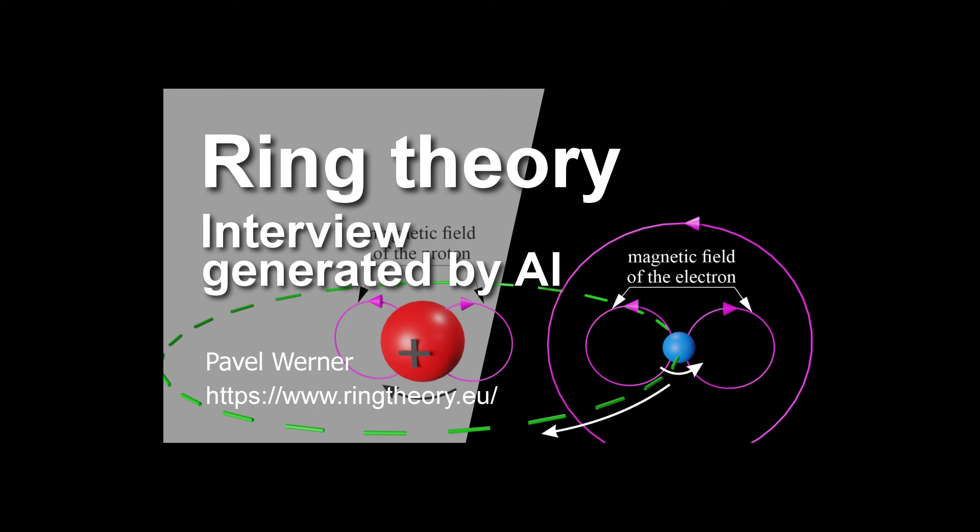Exactly. In traditional chemistry, we explain covalent bonds through the overlapping of electron orbitals, those regions around the nucleus where electrons are most likely to be found. Right. I remember that from chemistry class. But RT suggests that it's actually the magnetic fields created by those ring-shaped protons that draw those shared electrons in, creating that bond. So instead of just randomly bumping into each other and deciding to share, those electrons are being guided by those tiny ring-shaped conductors within the nucleus. Precisely. And because the arrangement of those rings is unique to each element, it means that each element will have its own specific way of forming covalent bonds, its own little dance that it does with other atoms.